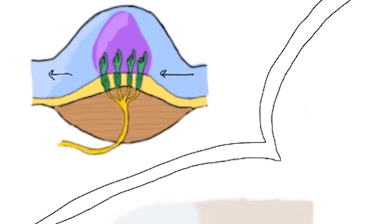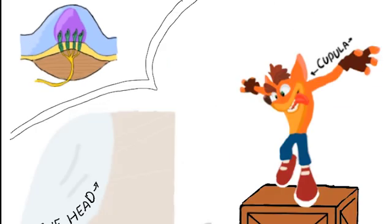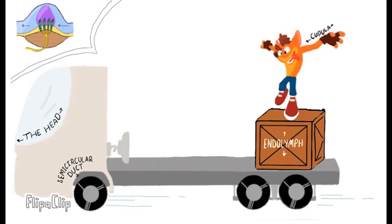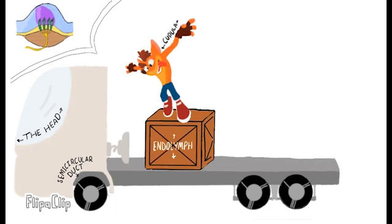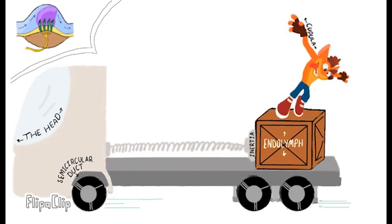Afferent nerve fibers from the hair cells carry vestibular information to the central nervous system. For example, when the head is rotated counterclockwise to the left, the following events occur in the horizontal semicircular canals.